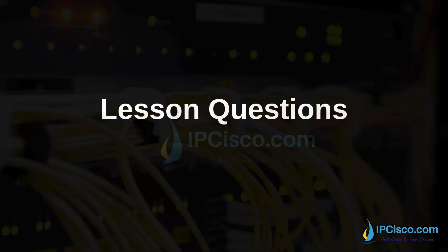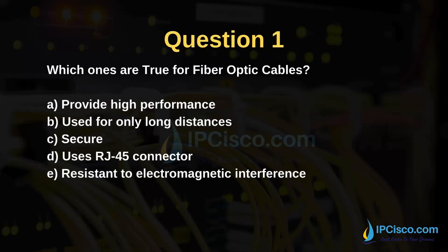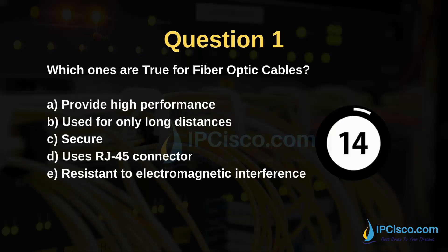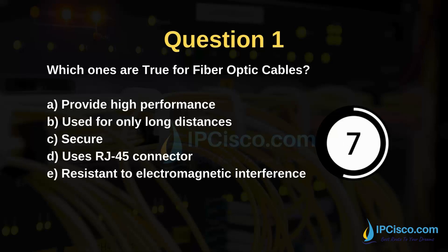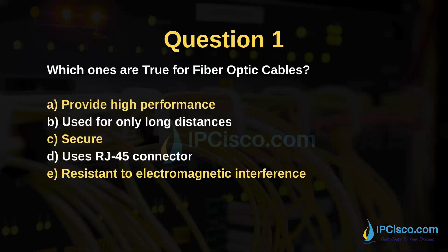We have finished the lesson. Now let's test what we have learned. Which ones are true for fiber optic cables? Options: provide high performance, used for only long distances, secure, uses RJ45 connector, resistant to electromagnetic interference. The correct answers are A, C, and E.